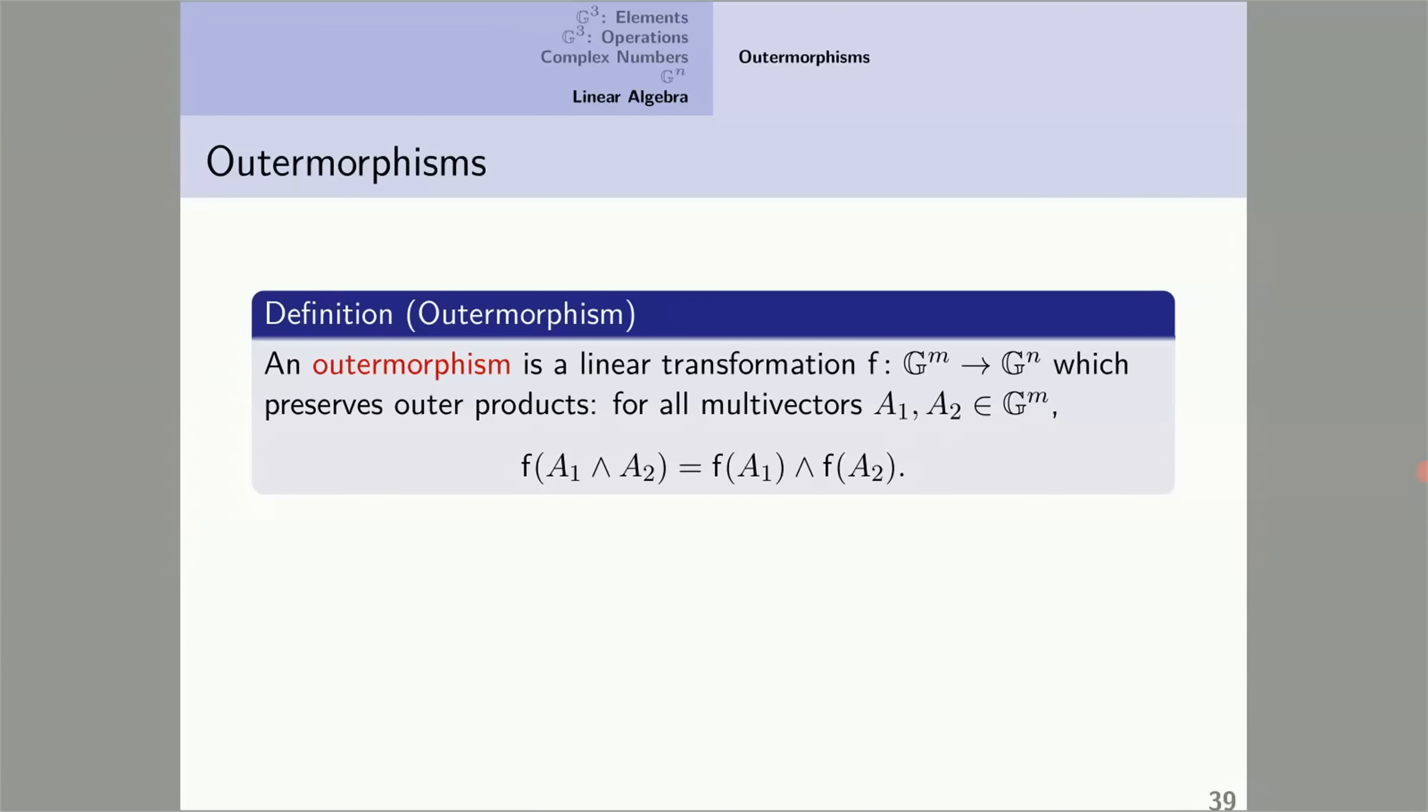Automorphisms. Here's the definition of an automorphism, motivated by what we observed with projections, rotations, and reflections. An automorphism is a linear transformation from G^m to G^n which preserves outer products. For all multivectors A1 and A2, F preserves their outer product. F of A1 outer A2 equals F of A1 outer F of A2.